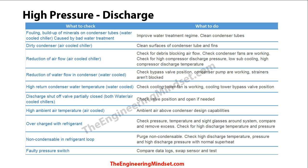Another problem that will cause the chiller to trip on high pressure is when the return condenser water from the cooling tower is too hot. Check that the cooling tower fans are working, that the bypass valves are properly aligned, and that the water is actually passing through the cooling towers to reject heat rather than bypassing them and returning directly to the chiller.